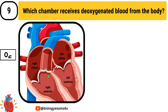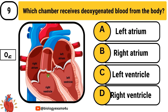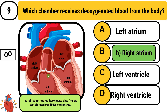Question number 9: Which chamber receives deoxygenated blood from the body? Option A: left atrium. Option B: right atrium. Option C: left ventricle. Option D: right ventricle. The answer is right atrium. The right atrium receives deoxygenated blood from the body via the superior and inferior vena cava.